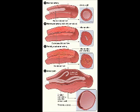Medium vessel vasculitis affects the main visceral arteries and their branches. We have polyarteritis nodosa, a necrotizing inflammation typically involving the renal arteries but sparing the pulmonary vessels. There is also Kawasaki disease, a vasculitis of the coronary arteries occurring mostly in children, where most deaths are due to coronary artery aneurysms.